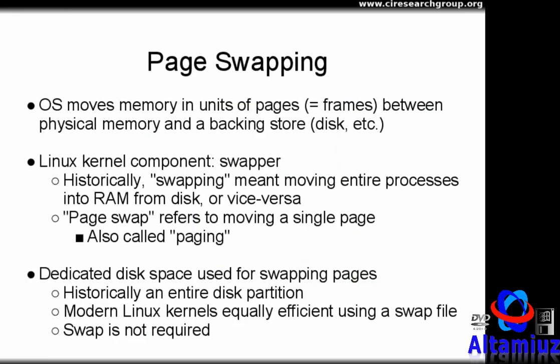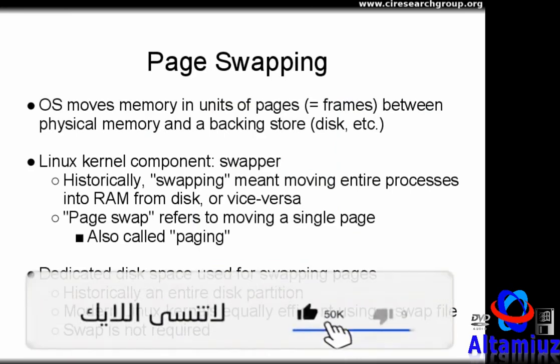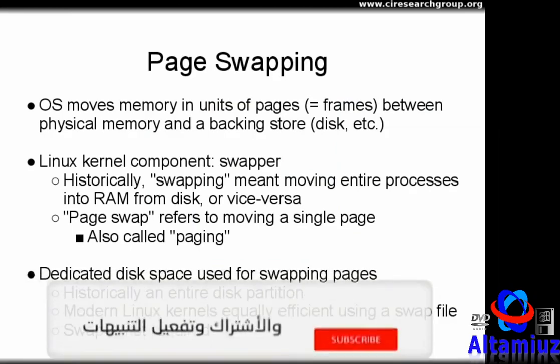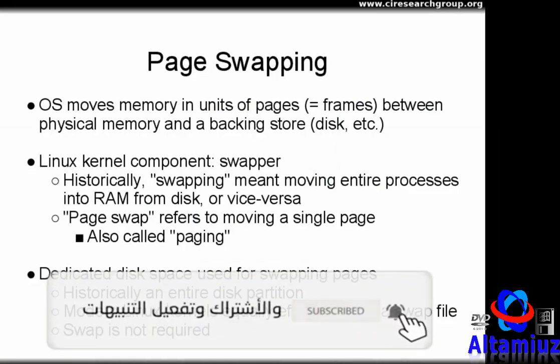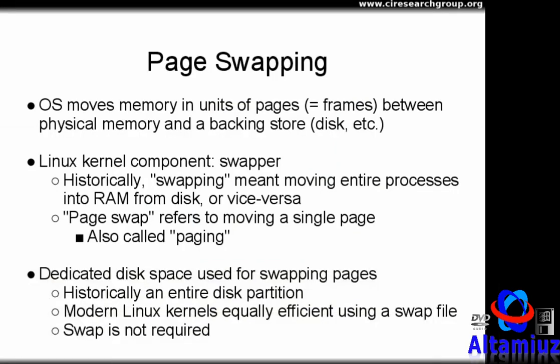The process of moving pages or frames of memory back and forth between RAM and the backing store is known either as swapping or as paging. Historically, the term swapping referred to the movement of entire logical address spaces, or entire processes, between RAM and disk. Moving single pages or frames of data between RAM and disk was called paging. In modern practice, both terms are used interchangeably, and the Linux kernel component that performs page movements is called the swapper.